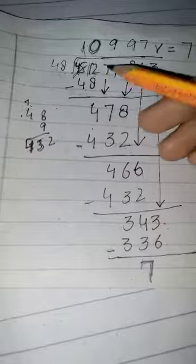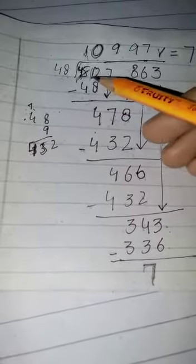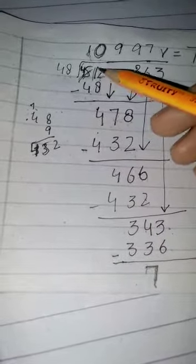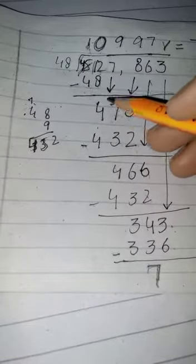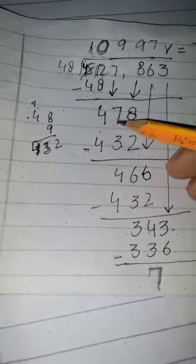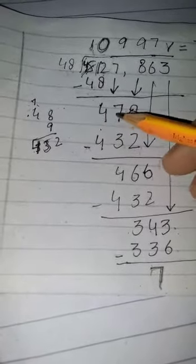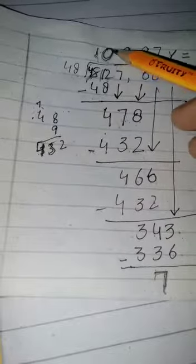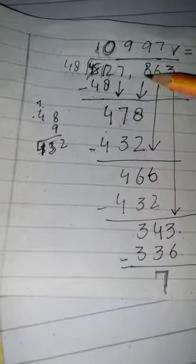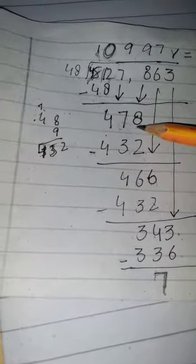Ab 2 jo hai woh small hai 8 se. So hum ne yahan se borrow kiya 1, 12 aur yahan pe 4. 12 mein se 8 subtract kiye 4 aur yeh wala 7 hum ne idhar write kar diya. 47 small value hai 48 se. So hum ne yahan par 0 write kiya. Aur yeh wala 8 hum ne 47 ke sath write kar diya.